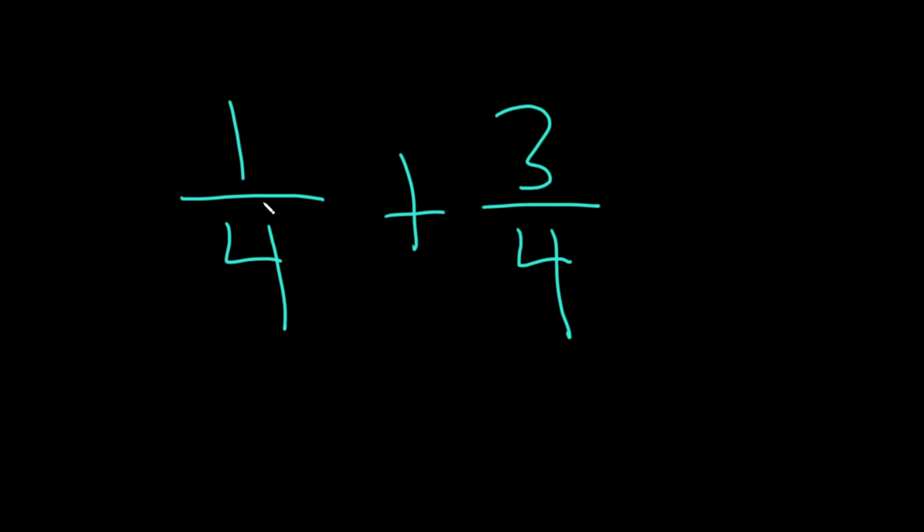So in this case, the denominator in the first fraction, 1 over 4, is 4, and the denominator in the second fraction, 3 over 4, is also 4.